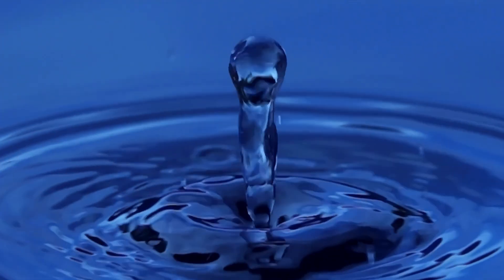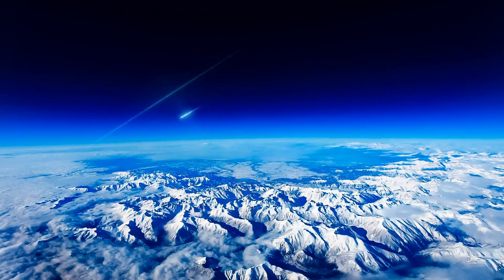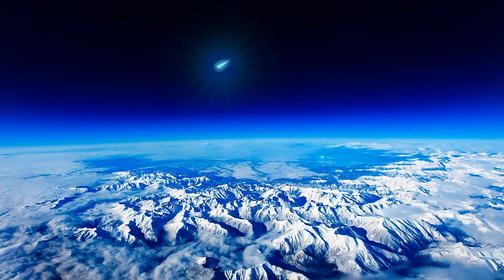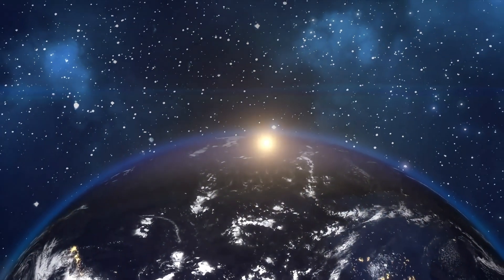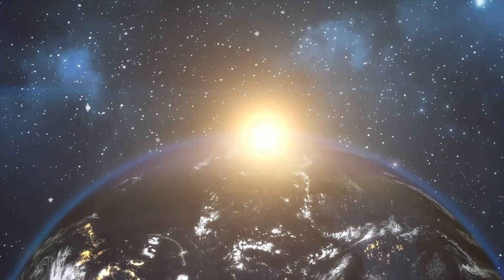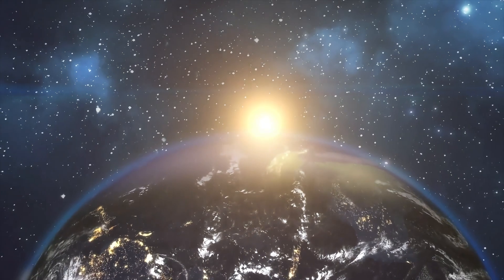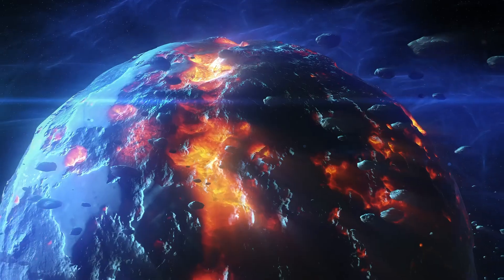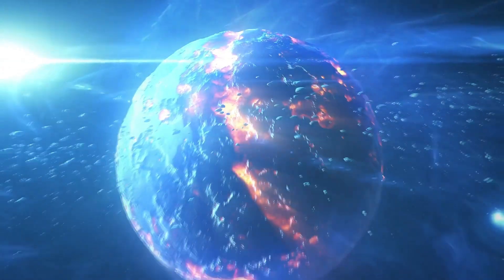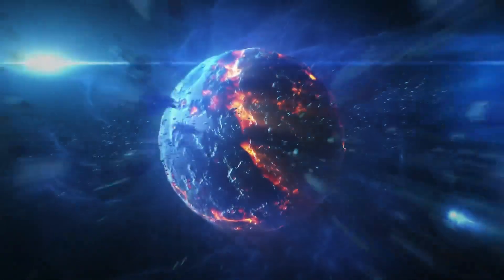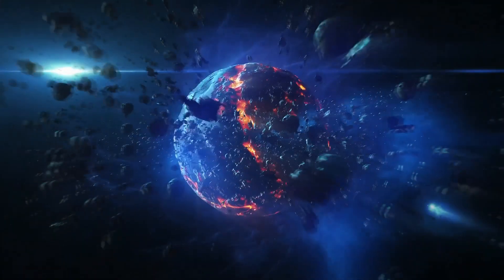Water, essential to life as we know it, likely arrived on Earth through icy comets and asteroids. As the planet stabilized, oceans formed, and a protective atmosphere developed, shielding the surface from the sun's harsh radiation. This young Earth would soon become the cradle for the complex processes that would give rise to life. But it was still a long way from the lush, blue world we know today.